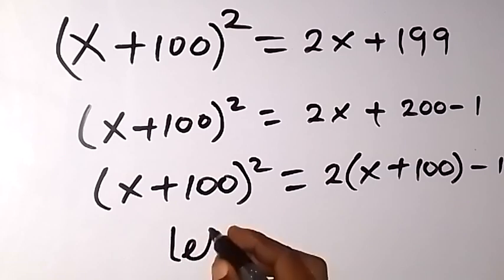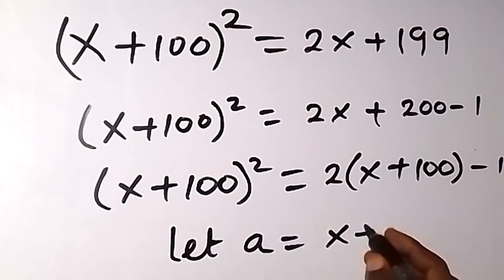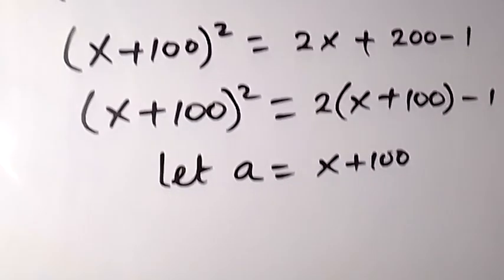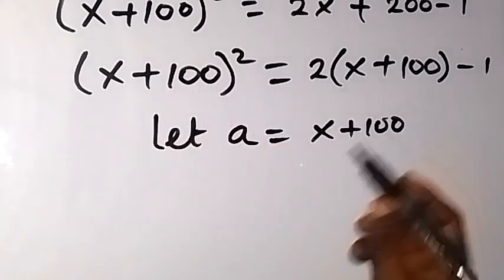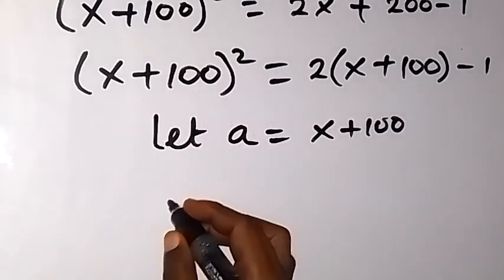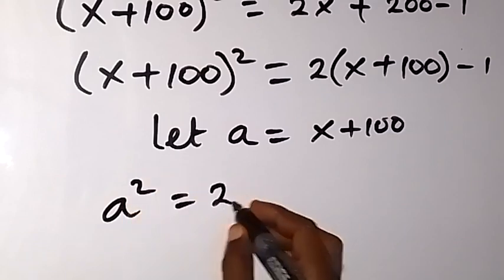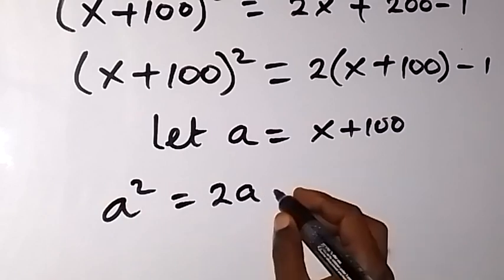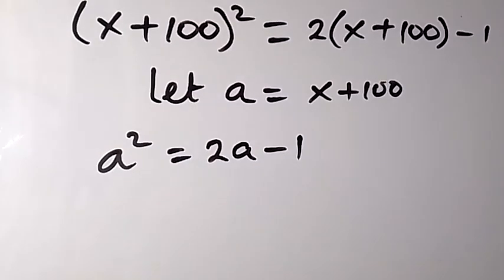We can say let the letter a be equal to x + 100, and we replace x + 100 with a. In the next step we have a² equals 2 times a, that's 2a, minus 1.